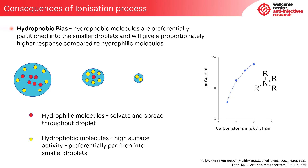There are a number of consequences of the ionization process, and the first we look at is that of hydrophobic bias. It's been shown that hydrophobic molecules are preferentially partitioned into the smaller droplets and therefore give a proportionally higher response compared to hydrophilic molecules. The hydrophilic species tend to be solvated and spread throughout the droplet, whereas the hydrophobic molecules are surface active and tend to be distributed at the surface. As the droplet splits into smaller droplets, those species at the surface are proportionally taken up to a higher degree, resulting in a higher proportion of hydrophobic molecules in the smaller droplets, and this is repeated as the droplet decreases in size.